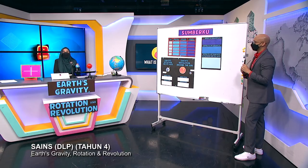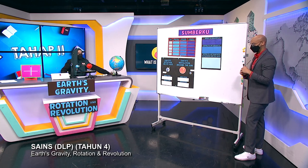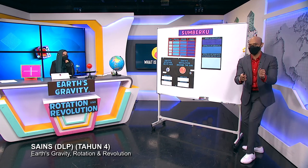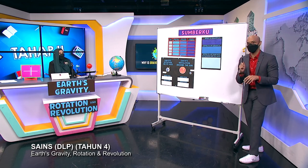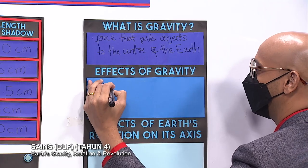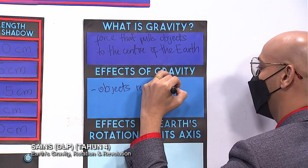What are the effects of gravity? There are two effects. First, objects or people would remain on Earth. Second, they won't float in the air or fly off from planet Earth. Objects remain in their current position, and they don't float in the air.